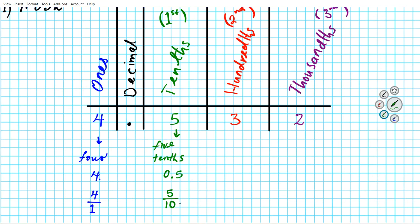Now let's look at the second decimal place — the hundredths place. We have a 3 there. Since it's in the second decimal place, the hundredths place, the name of this digit is 'three hundredths.' Now if I wanted to write it as a decimal, remember the hundredths place is the second decimal place, so we're going to need a filler. We have zero point — and we have: